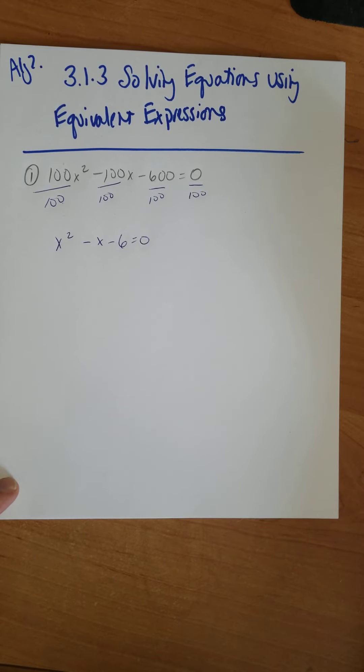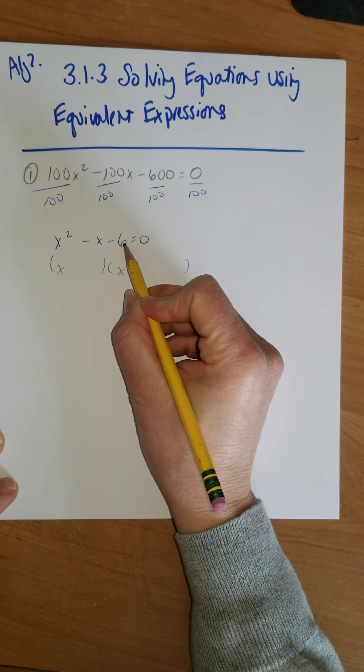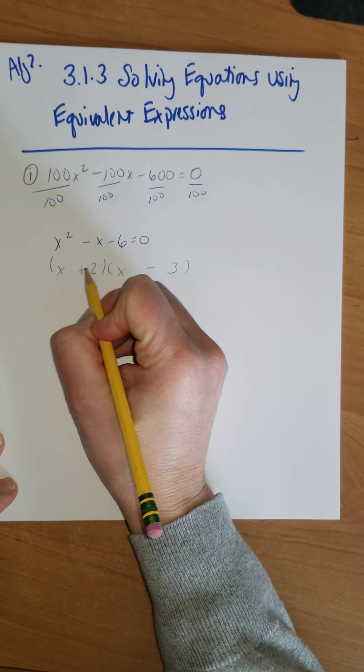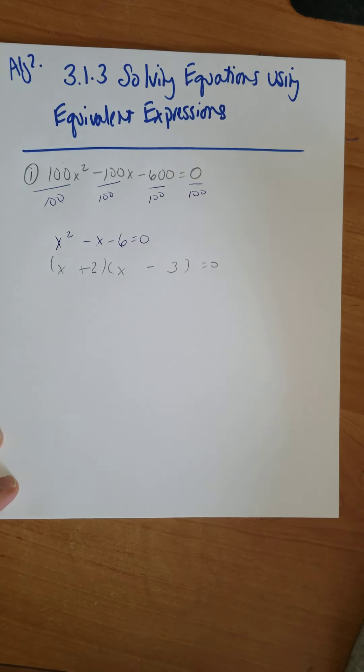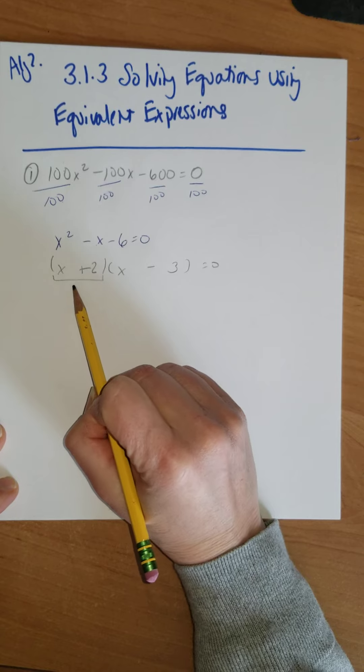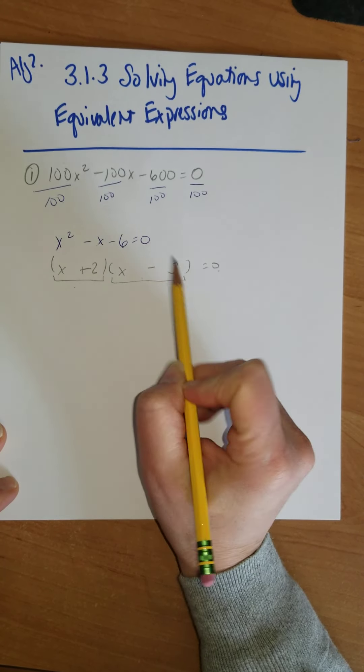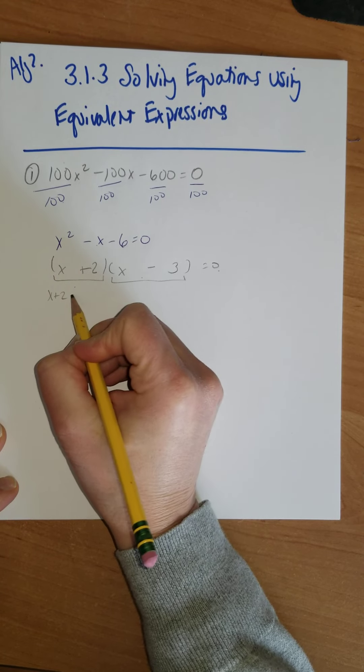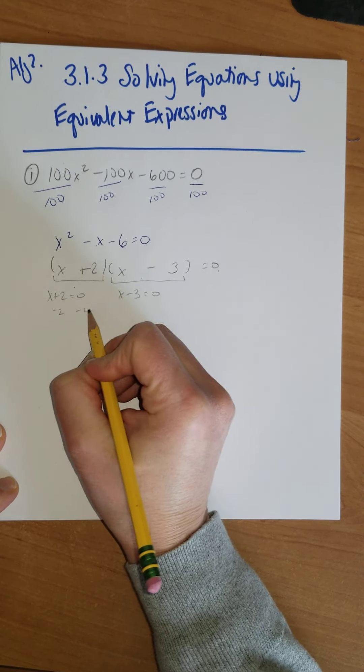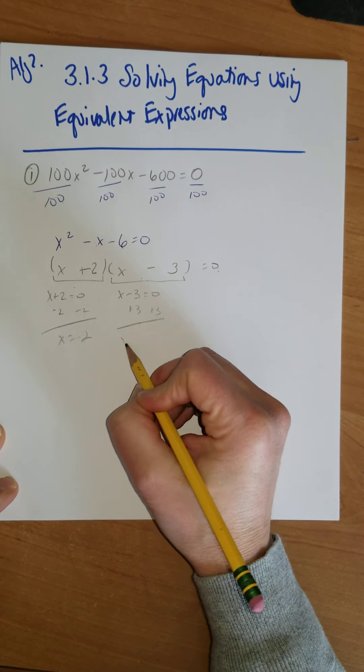Well, I could solve it by factoring. So I'm going to factor this. x² is an x and an x. The factors of 6 that add or subtract to negative 1 would be 3 and 2, minus 3 plus 2. That equals 0. So then if I'm going to solve this equation using the zero product property, something times something else should equal 0. So either x + 2 = 0, or x - 3 = 0. x could equal -2, or x could equal 3.